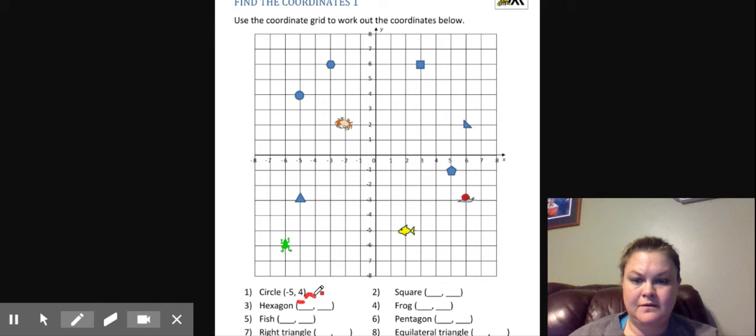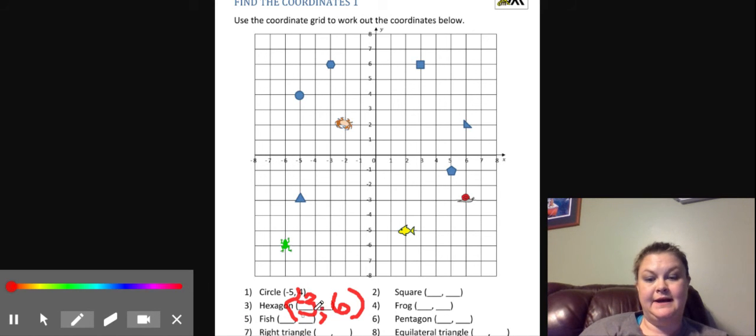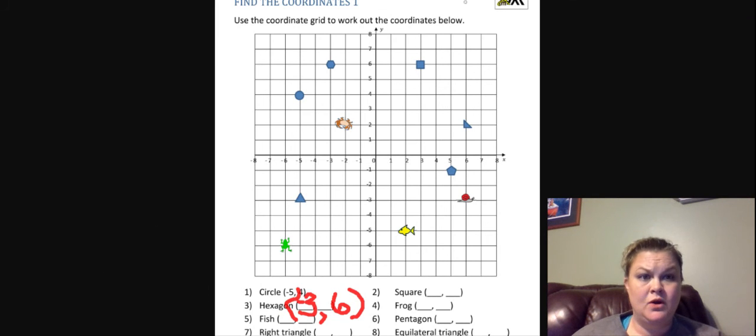And then the Y is positive six. So if you're writing like a location on your coordinate plane, you're always going to do X then comma Y. It's always going to be in the parentheses. That was kind of just basically what I wanted to go over - going left, go side to side, and then up and down.